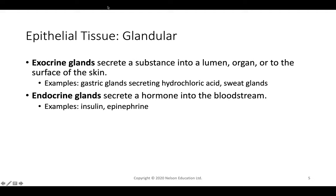Sweat glands are another exocrine example, secreting directly to the outside surface of the skin. Endocrine glands secrete internally into the bloodstream, such as hormones. Good examples include insulin, which regulates blood sugar, and epinephrine, which initiates the fight-or-flight response.